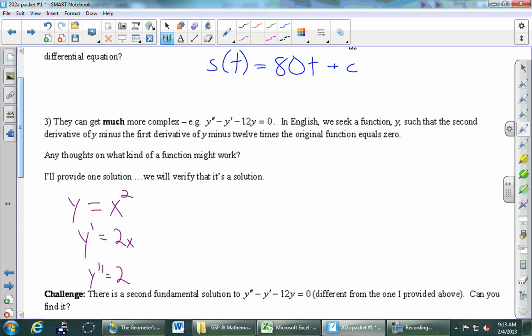Does this work? Well, let's see. If you plug in y double prime, what do we stick up there? Stick a 2 up there minus y prime 2x minus 12 times y x squared. Is this equal to zero? I'm not asking you to solve that equation. I'm asking if it's always true. No. That is definitely not always equal to zero. So x squared didn't work. Will any polynomial work? Yeah, probably not.